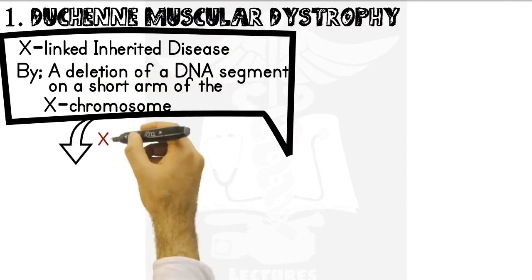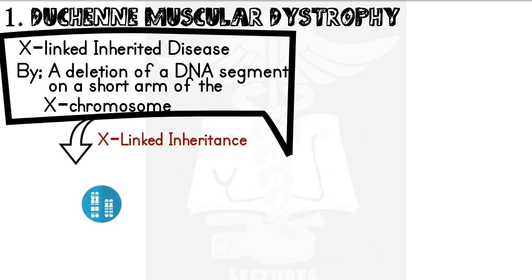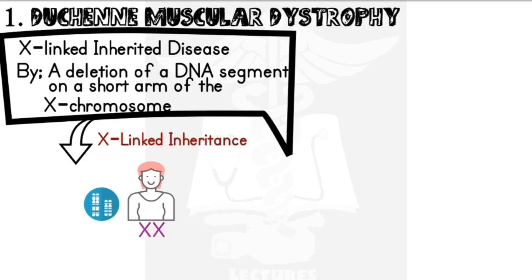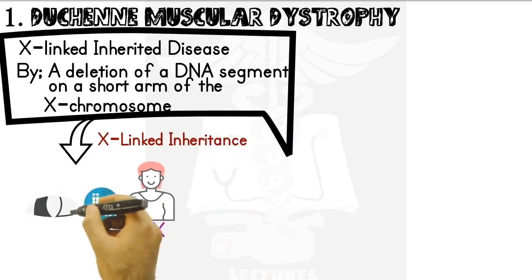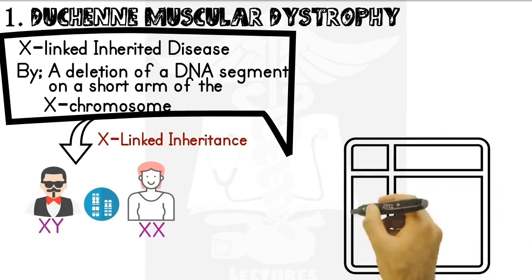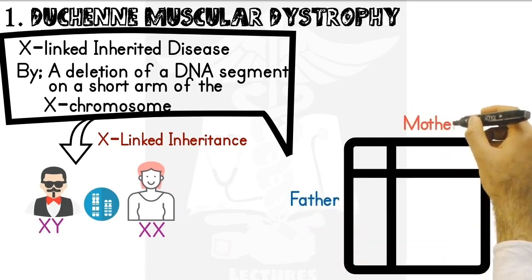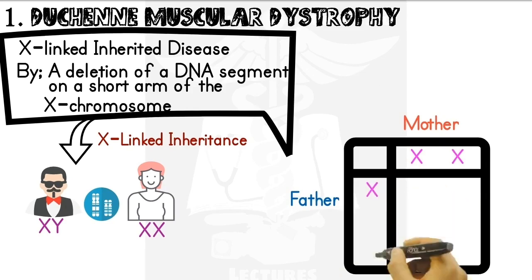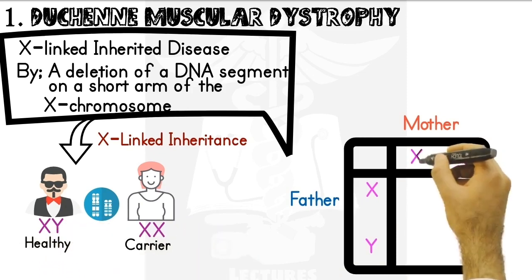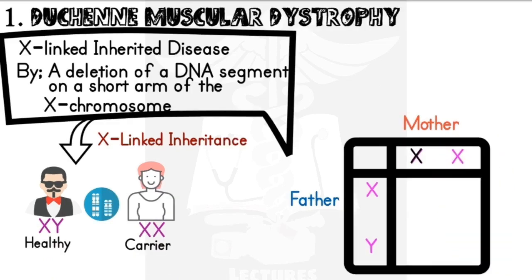So what does an X-linked inheritance mean? In females, the sex chromosomes are the same — two Xs — so they're referred to as homogametes. In males, there are two distinct chromosomes, so they are called heterogametes. X-linked inherited disease means that the mutation or deletion of the DNA segment is on the X chromosome, usually in the woman, but this does not mean the female has the muscular dystrophy.